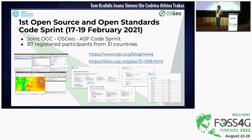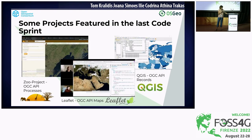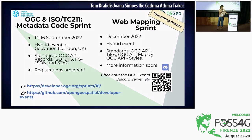Sprints are organized regularly by OGC and you are very welcome to participate. The first joint code sprint, organized jointly by OSGEO, Apache Software Foundation, and OGC, took place last year and was a huge success with many projects joining. This year we organized a second edition, which was also very well attended. There were different projects that participated, some OSGEO projects, but we would love to see more projects coming. There are plans to organize another one next year.